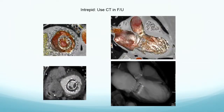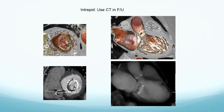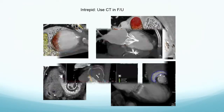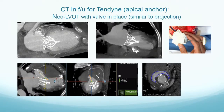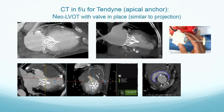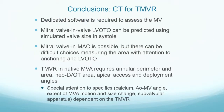We can do CT afterwards, and every one of the bioprosthetic valves has the potential for HALT — here's an example of that. You can do the same thing after a Tendyne valve, look at the apical tether, and measure the LVOT to confirm what was predicted. In conclusion: you need dedicated mitral software to assess the mitral valve. Valve-in-valve LVOT obstruction can be predicted by simulating a valve. Valve-in-MAC is more difficult and requires careful measurement with attention to anchoring and outflow obstruction. TMVR in the native MVA requires specific measurements as well as attention to the particular valve being placed.